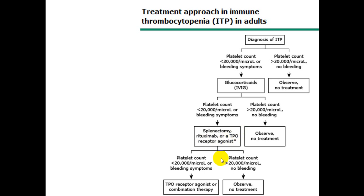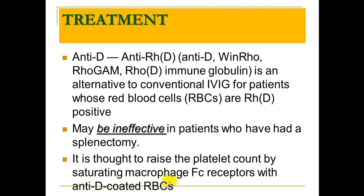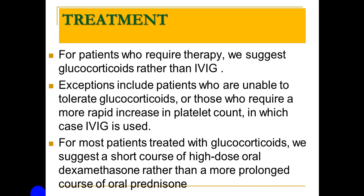If after treatment the platelet count is above 20, observation only. Below 20, options include splenectomy, rituximab, or thrombopoietin receptor agonists. Anti-D (RhoGAM) can also be used and is effective only in RH-positive patients. For patients requiring rapid treatment, IVIG is needed. IVIG can be used as initial treatment in patients not tolerating steroids, but the problem with IVIG is cost.